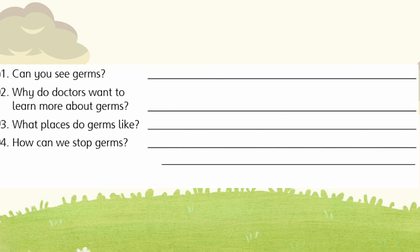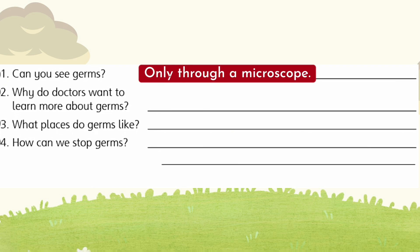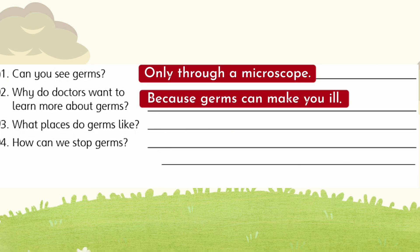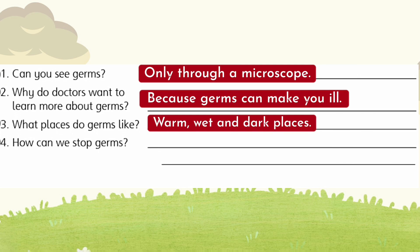Activity 2. Read again and answer the questions. 1. Can you see germs? Only through a microscope. 2. Why do doctors want to learn more about germs? Because germs can make you ill. 3. What places do germs like? Germs like to live in warm, wet and dark places.